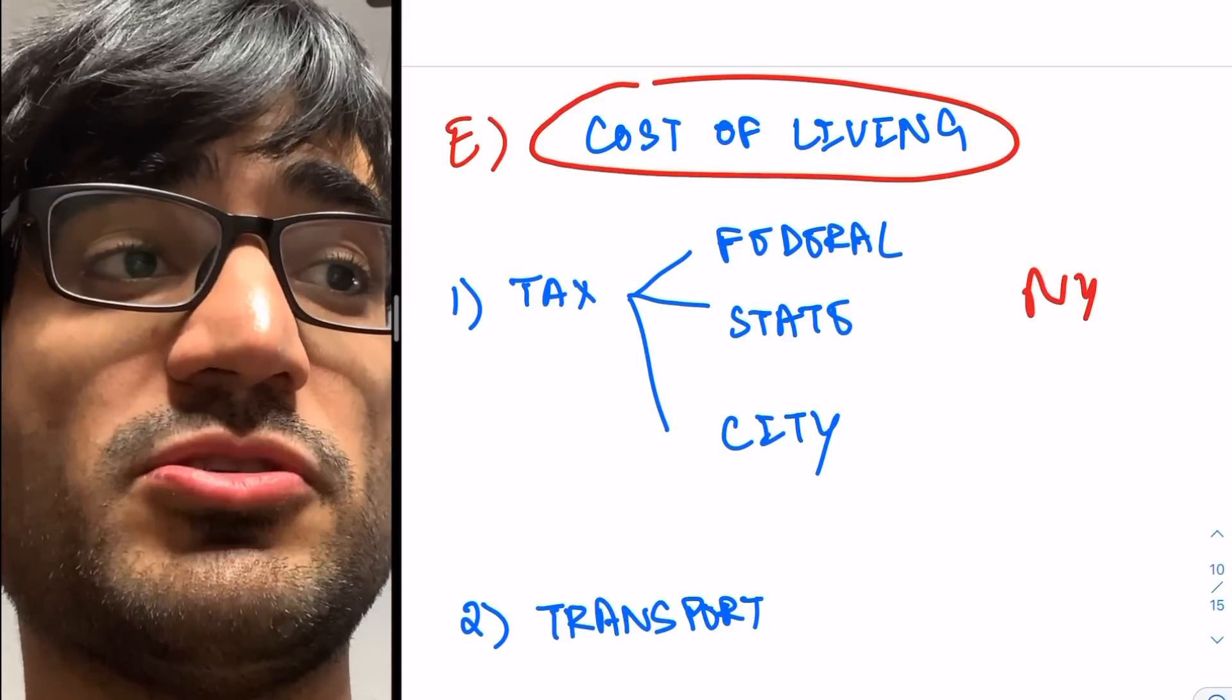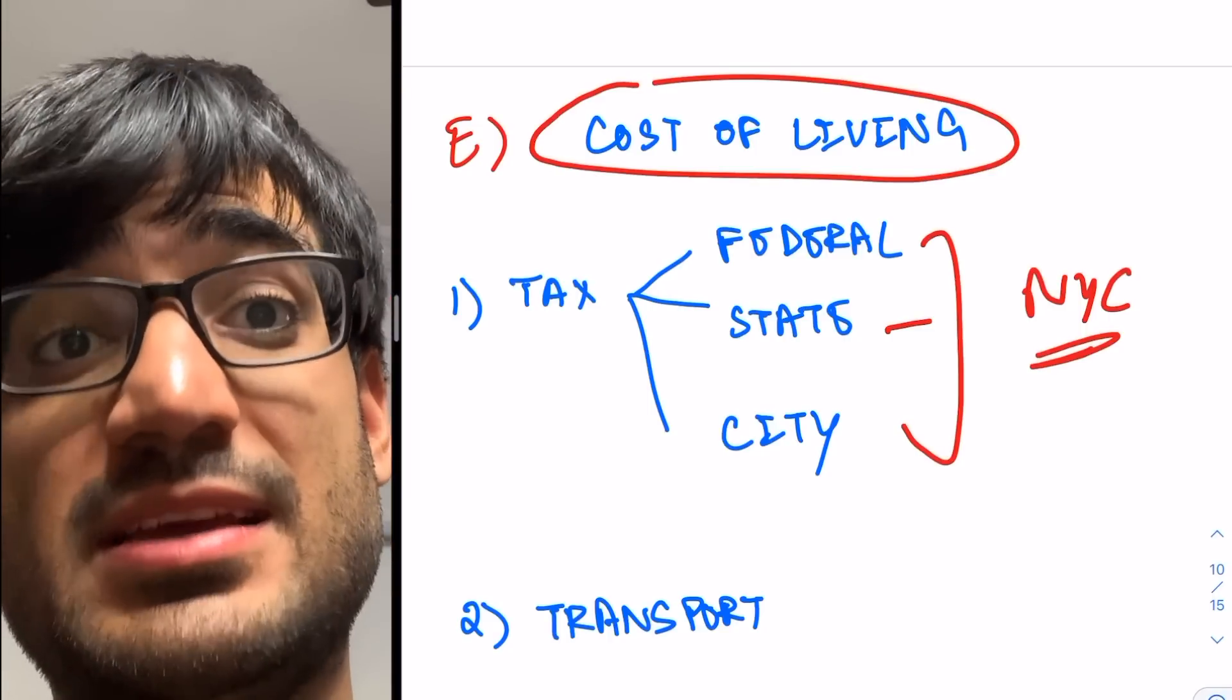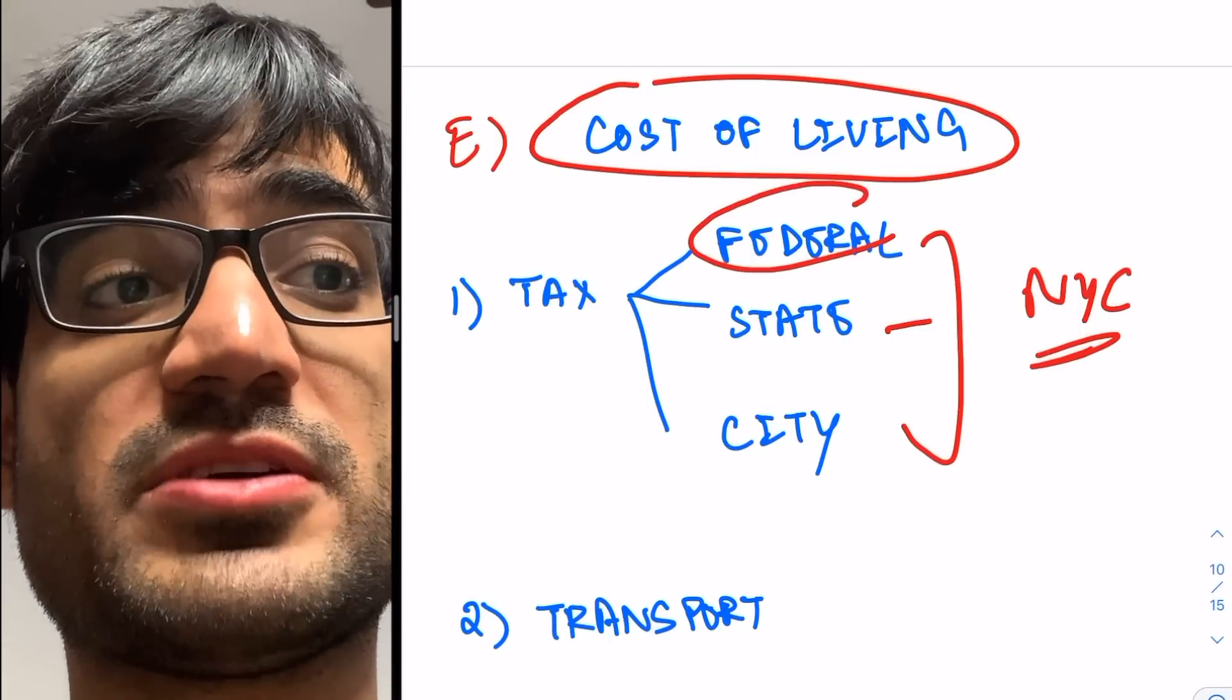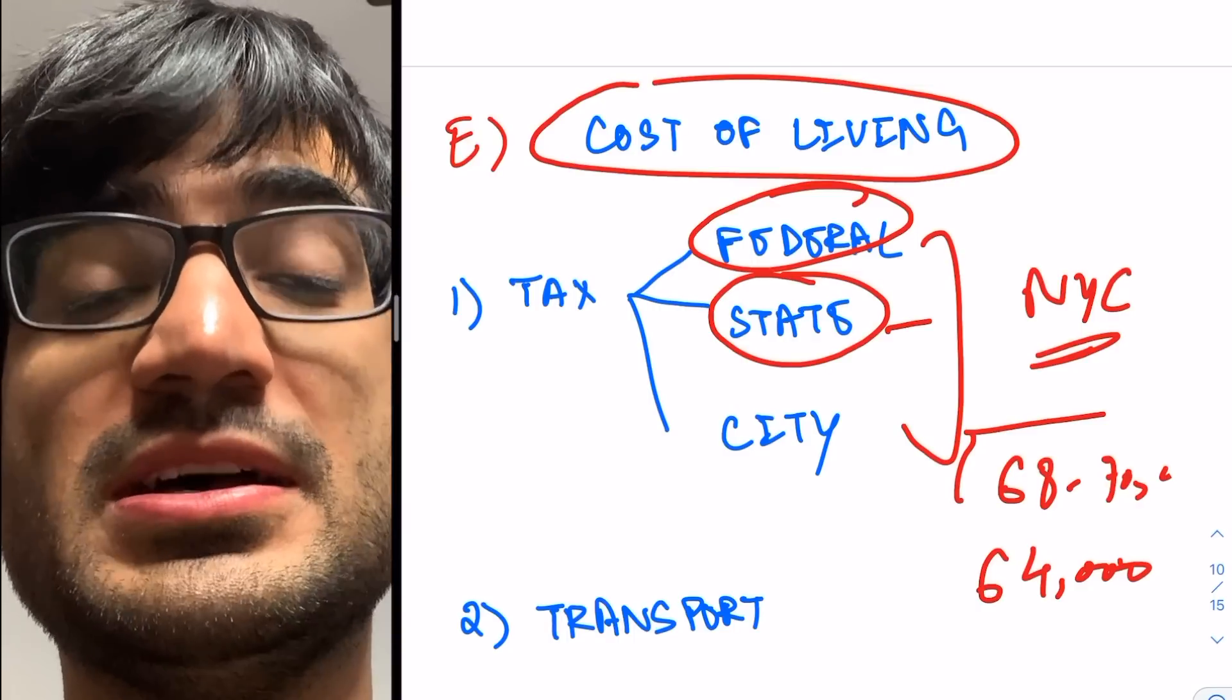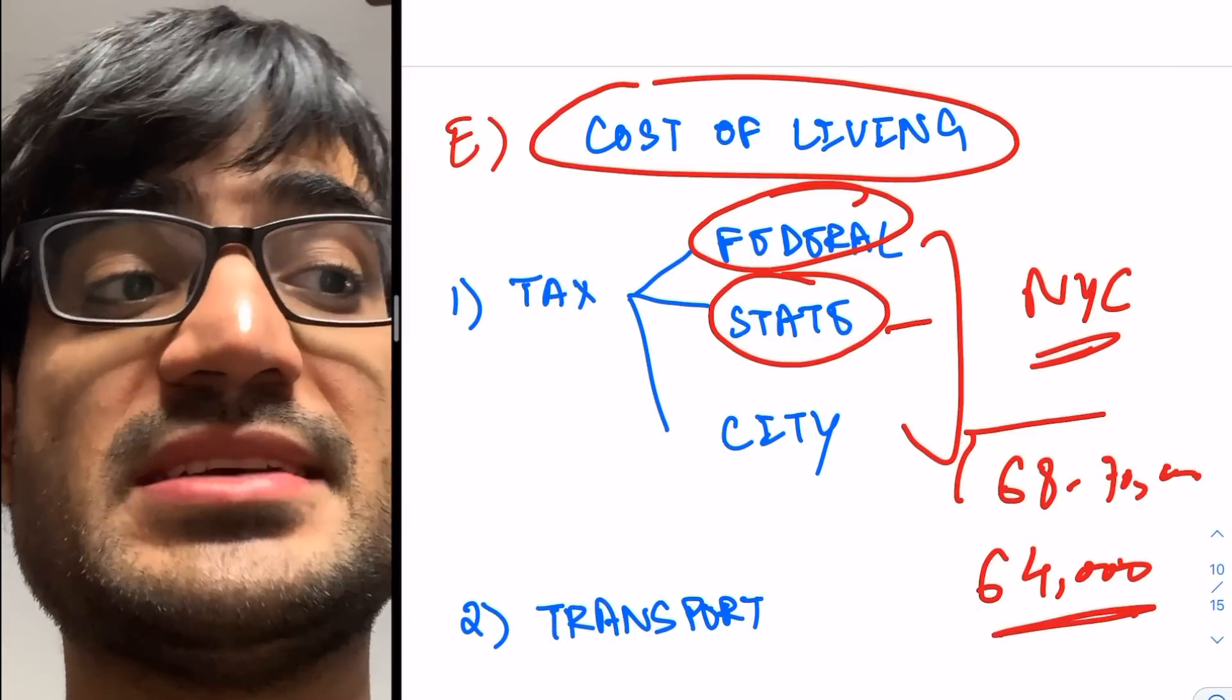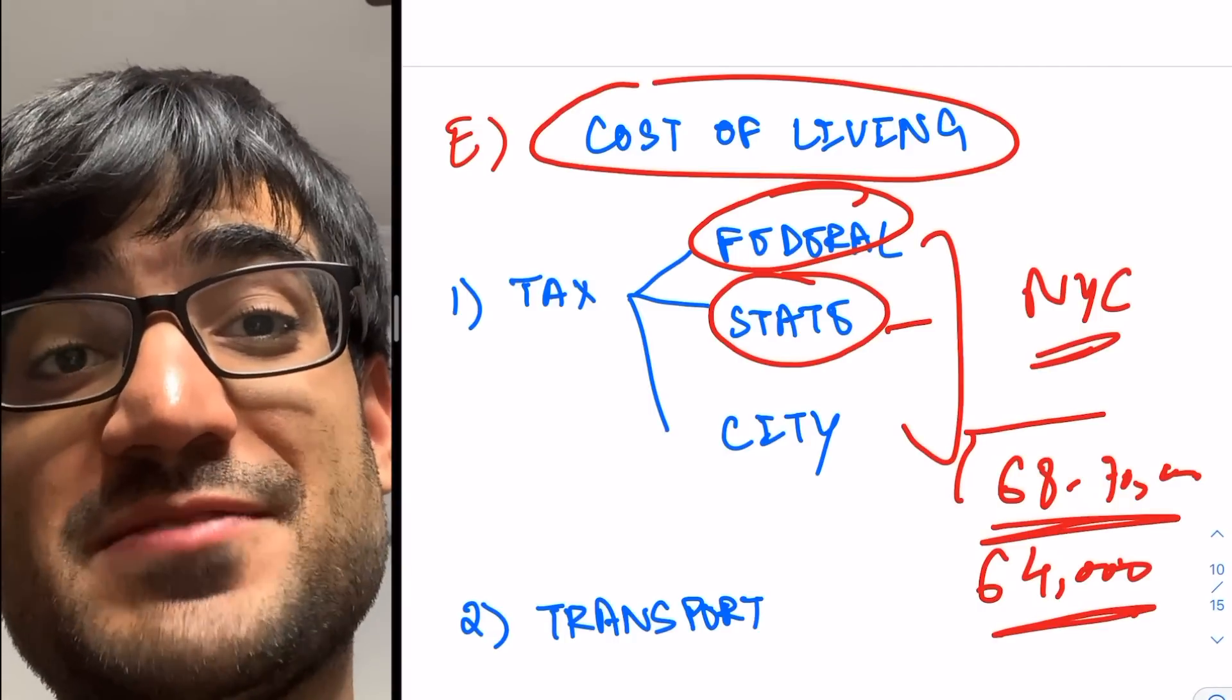So let's say New York City. New York City is a great place to live in. But you are paying three taxes, federal, state, and city. Compared to where I'm going, where there is no city tax. So I just have to give federal and state tax. So the average residency salary of a New York City first-year resident would be about $68,000 to $70,000. My salary is $64,000. But what you now need to consider is how expensive New York City is.